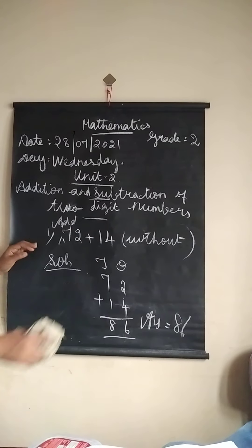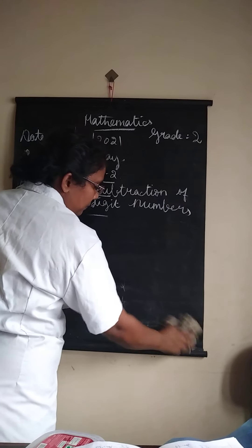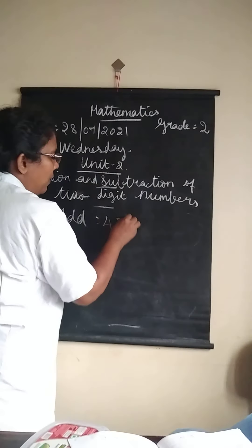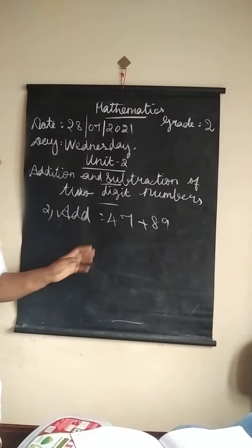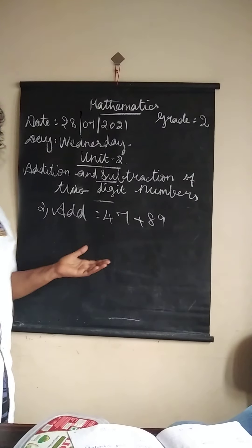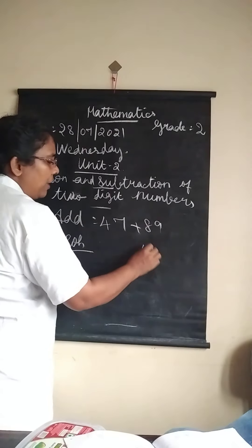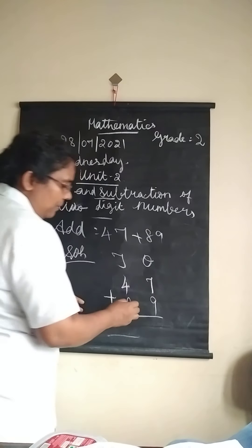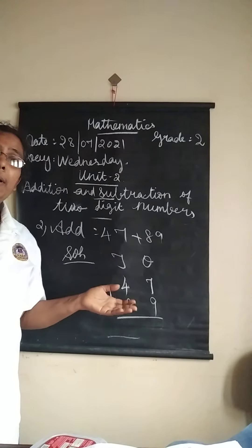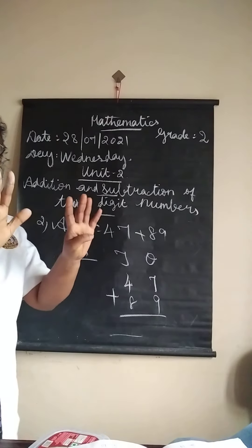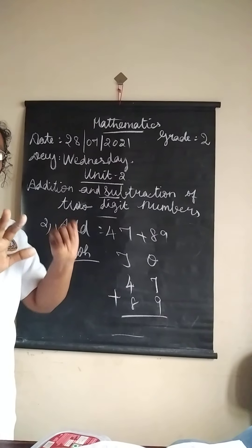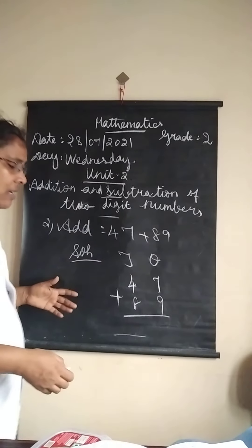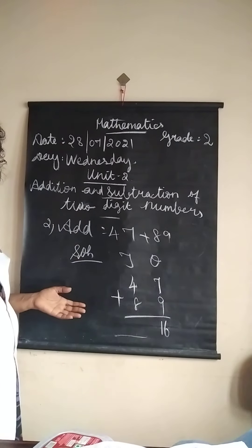Shall we see another question? Listen to the second question: add 47 plus 89. For the solution, you should write the number 47 plus 89. Shall we add? What is the answer for 7 plus 9? 7 in mind, take 9 fingers — 7 after 8, 9, 10, 11, 12, 13, 14, 15, 16. When you add 7 and 9, you get 16. If you write 16 here, is it correct? No, it is not correct.